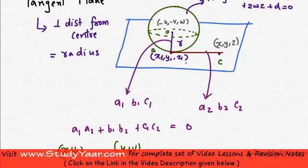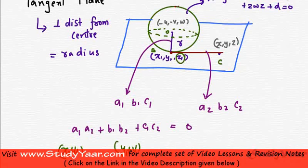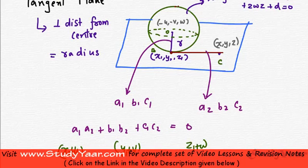This is x1, y1, z1. So essentially it is going to be x1 plus u and y1 plus v and z1 plus w. This is minus. We know that the center is at minus u, minus v.